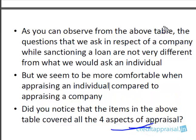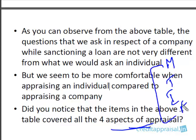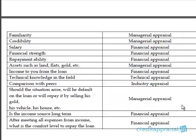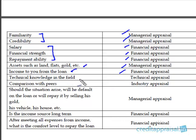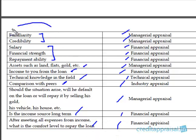We have actually covered all four aspects of the appraisal already. Familiarity and credibility correspond to managerial appraisal. Salary, financial strength, and repayment ability correspond to financial appraisal. Assets — whether the promoter will repay even if the loan goes bad — is also managerial appraisal. Income to the lender is financial appraisal. Technical knowledge and skills correspond to technical appraisal. Inter-group comparison corresponds to industry appraisal. Whether the borrower will default or repay is again managerial appraisal. Income source longevity and the comfort level after meeting expenses are both financial appraisal.